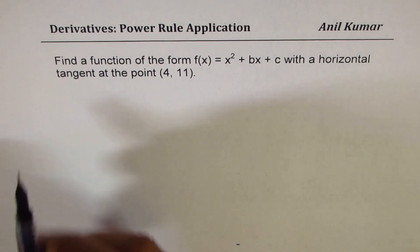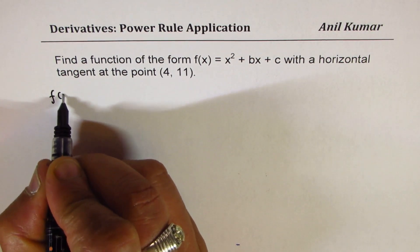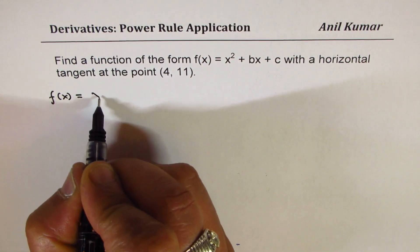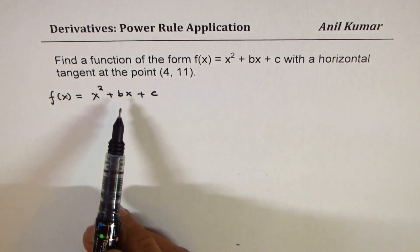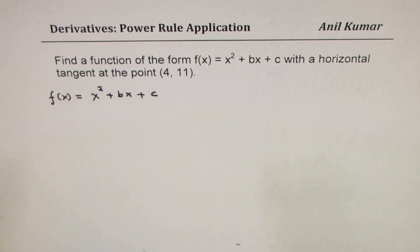Now in this equation, which is given to us as f(x) = x² + bx + c, we have to find two unknowns, which are b and c. So for that, we should have two equations, correct?